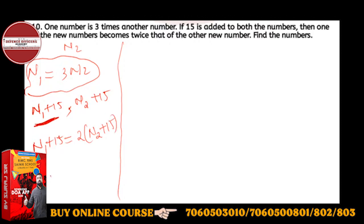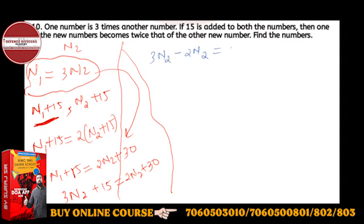This becomes n1 plus 15 equals 2n2 plus 30. Now substitute the value of n1, which is 3n2. So 3n2 plus 15 equals 2n2 plus 30.